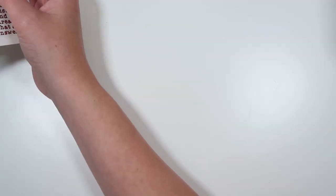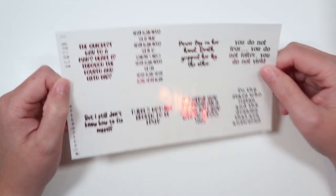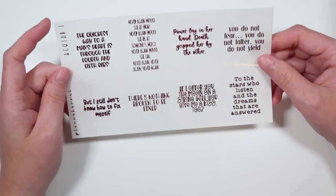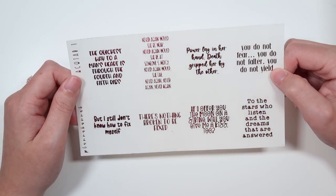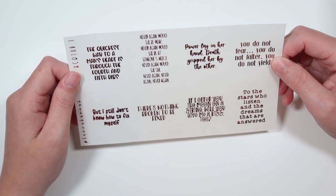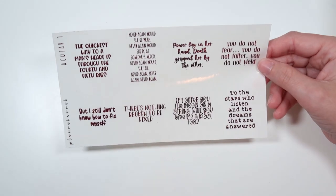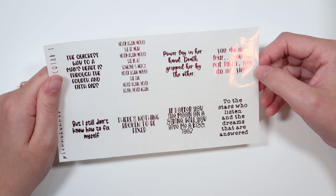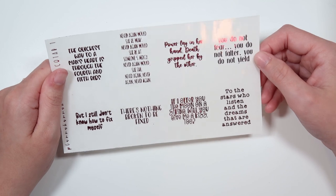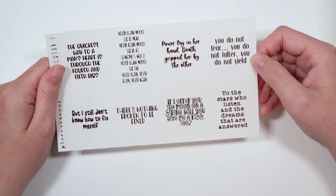And then to go with the new one of the new kits that came out this week from SBC, we have some ACOTAR quotes and overlays. We'll go over the quotes first. We have two sheets. I just Googled ACOTAR quotes and this is what we got. So if these are not the ones you want you can always do custom quotes or request them for the future. The quickest way to a man's heart is through the fourth and fifth ribs. Never, this is in deep pink by the way. Never again would she be weak. Never again would she be at someone's mercy. Power lay in her hand, death gripped by the other. You do not fear, you do not falter, you do not yield. But I still don't know how to fix myself. There's nothing broken to be fixed. If I offer you the moon on a string will you give me a kiss too? And to the stars who listen and the dreams that are answered.